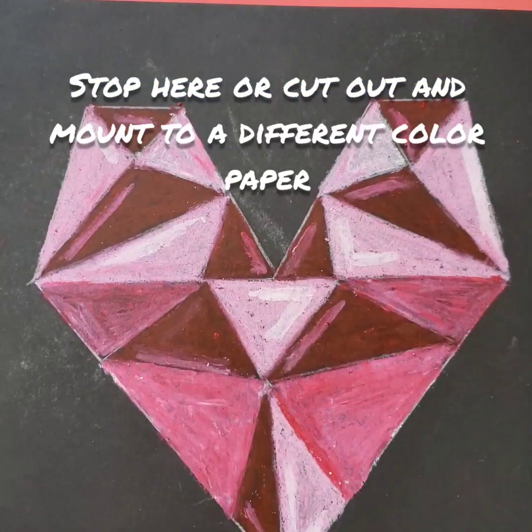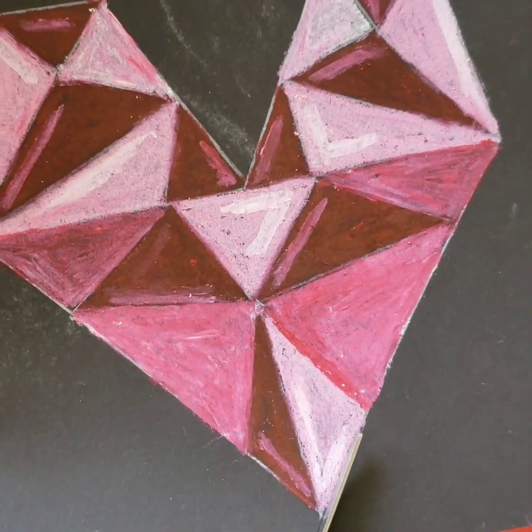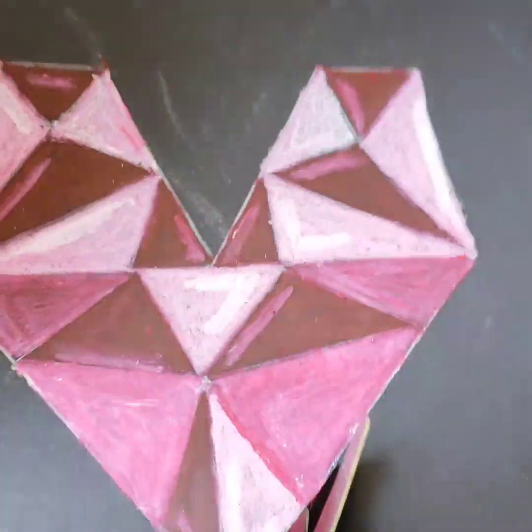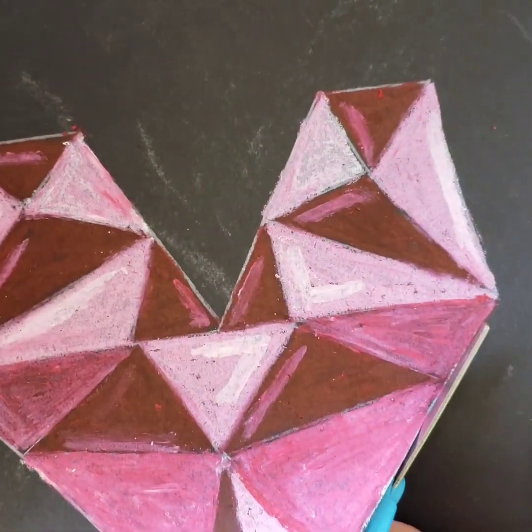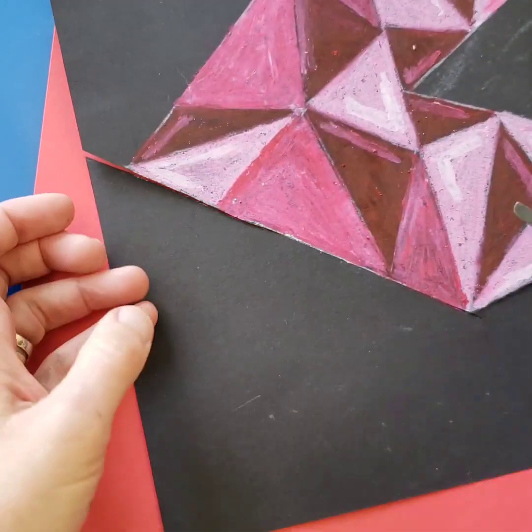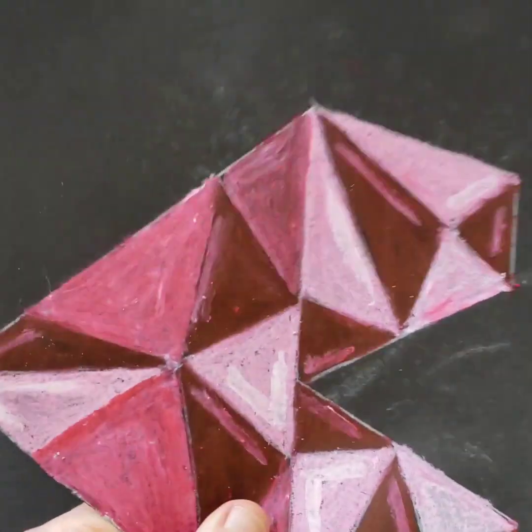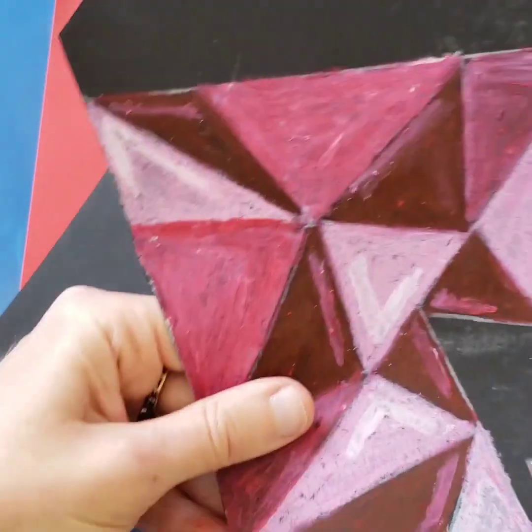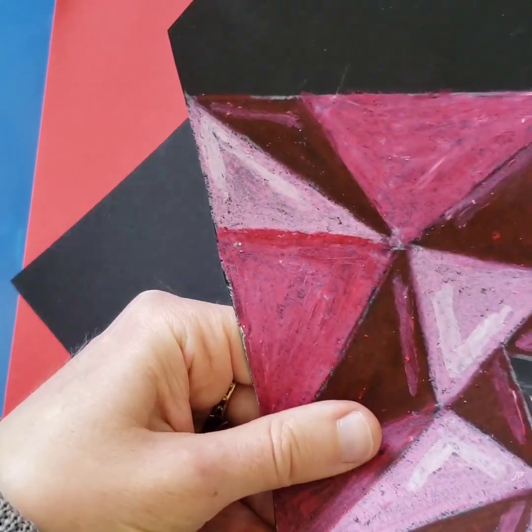Now that I've finished, I'm going to be using a pair of scissors. You can just keep it like this, but I'm going to cut my gemstone heart out of my black construction paper, and I'm going to be putting it on a different colored piece of construction paper, just mounting it on there, gluing it on there for display.